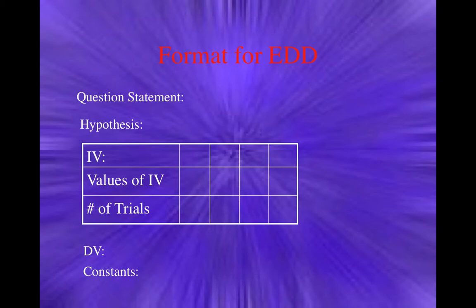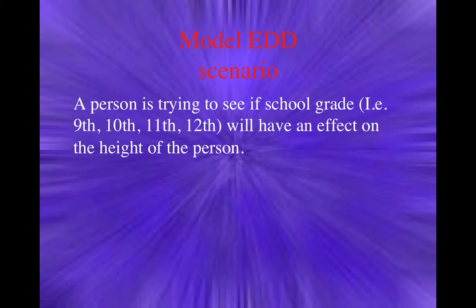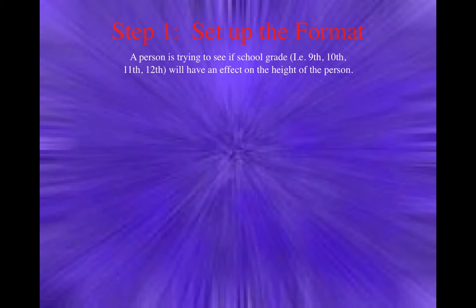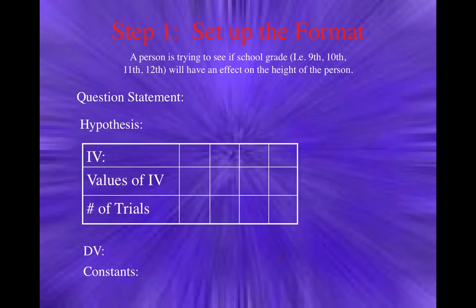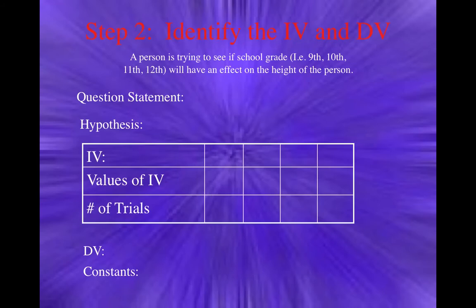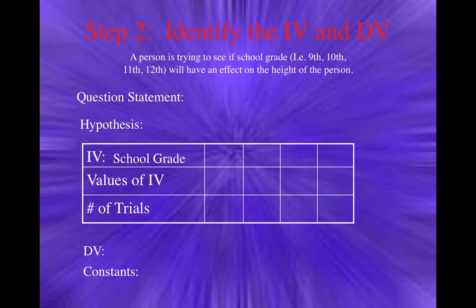Let's try an example. A person is trying to see if school grade — whether a kid is in 9th, 10th, 11th, or 12th grade — will have an effect on the height of the person. The first step is to set up the format. Then identify what is the IV and the DV. You're choosing to look at school grade — that is your independent variable, the thing you're choosing to change about your subjects. And you want to see if that has an effect on height, so height is your DV.